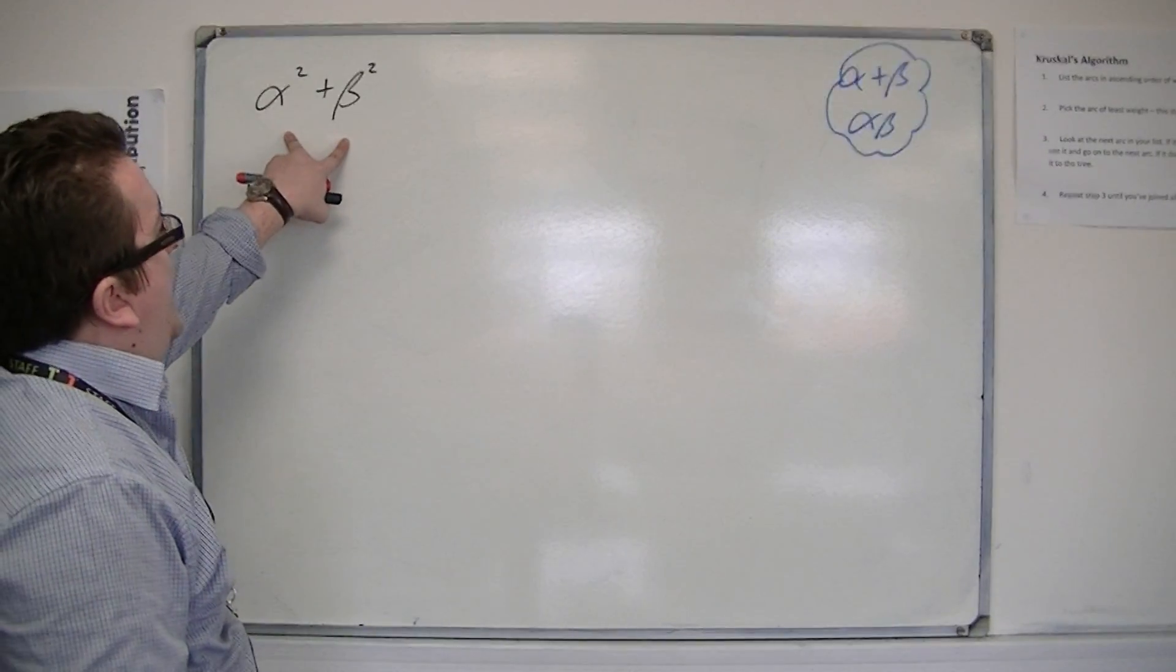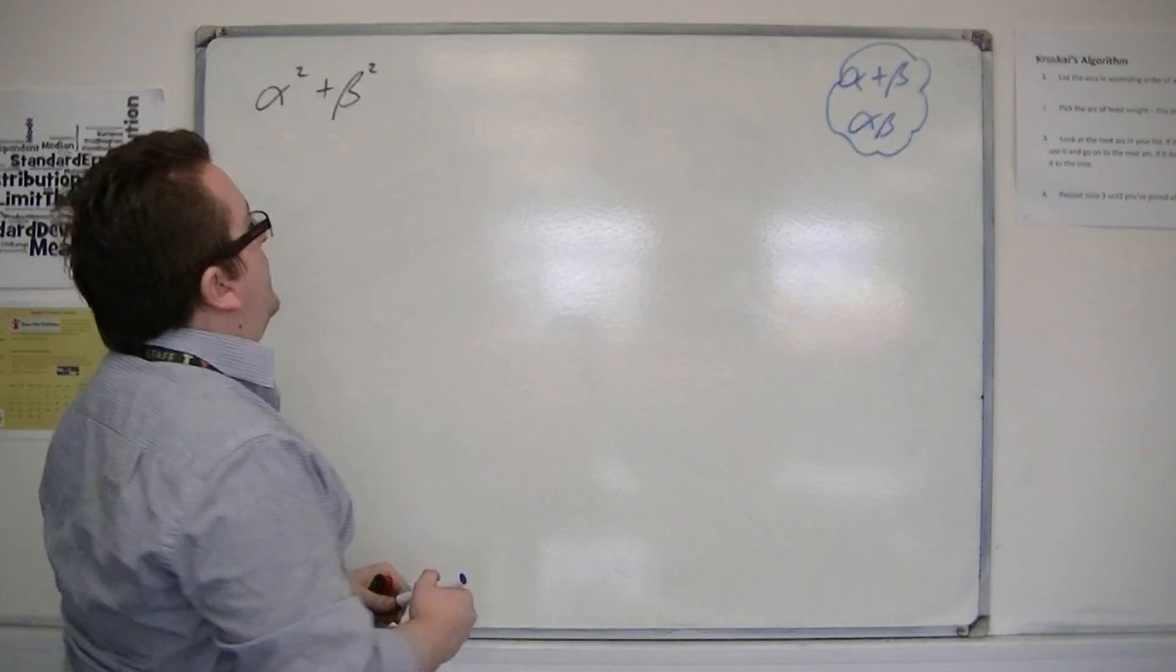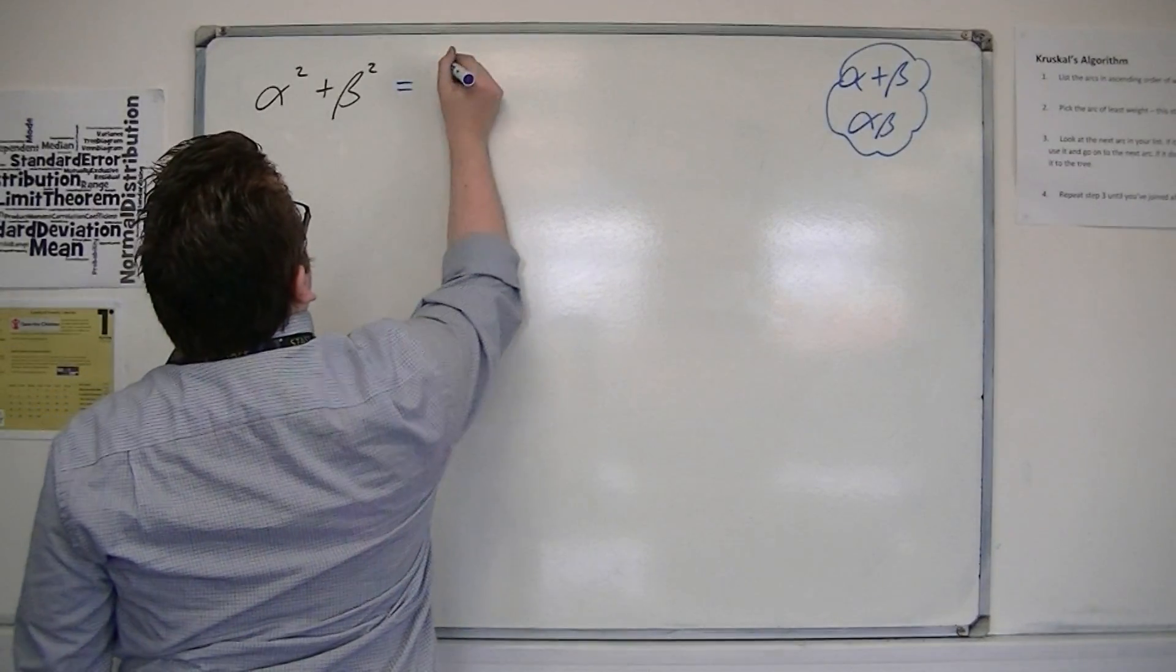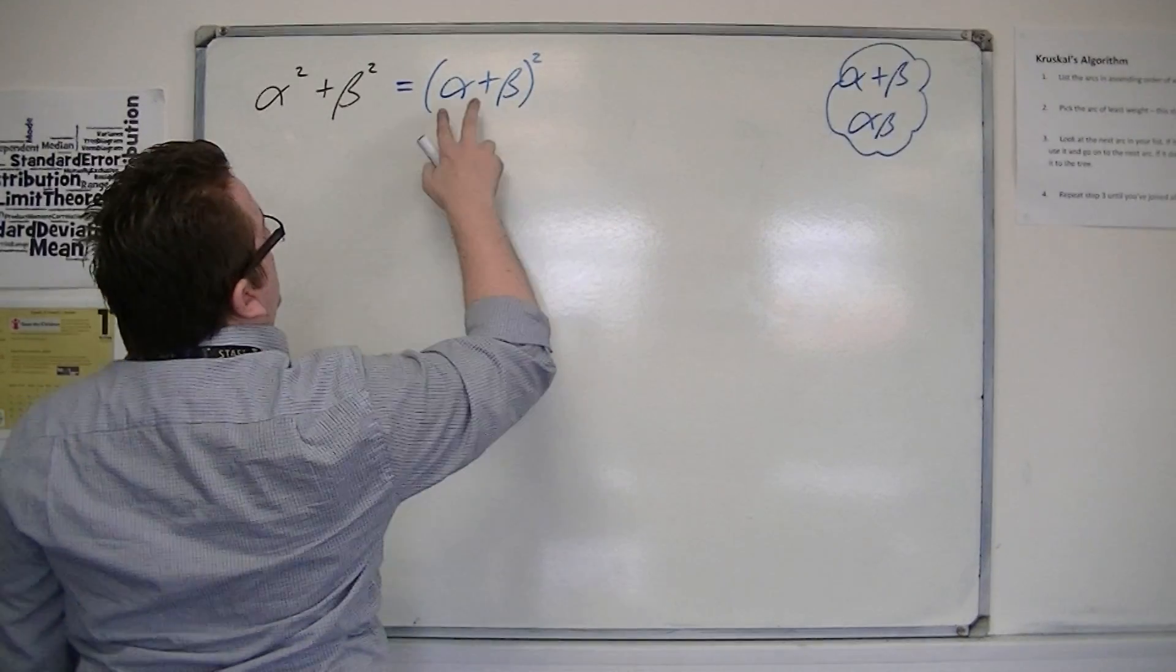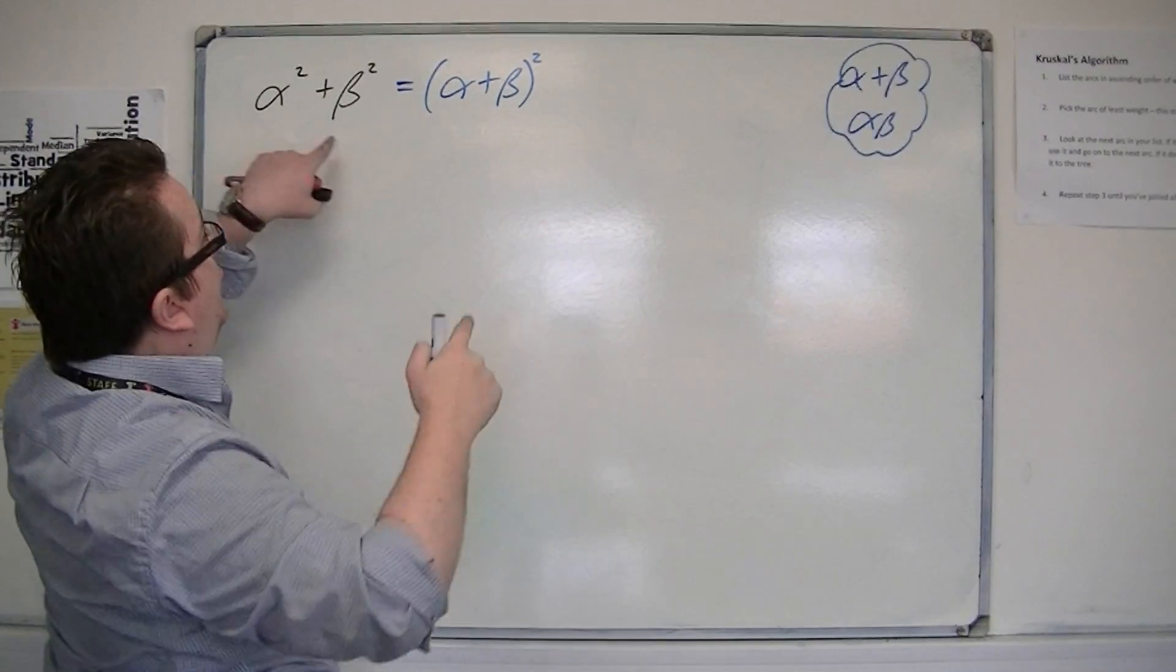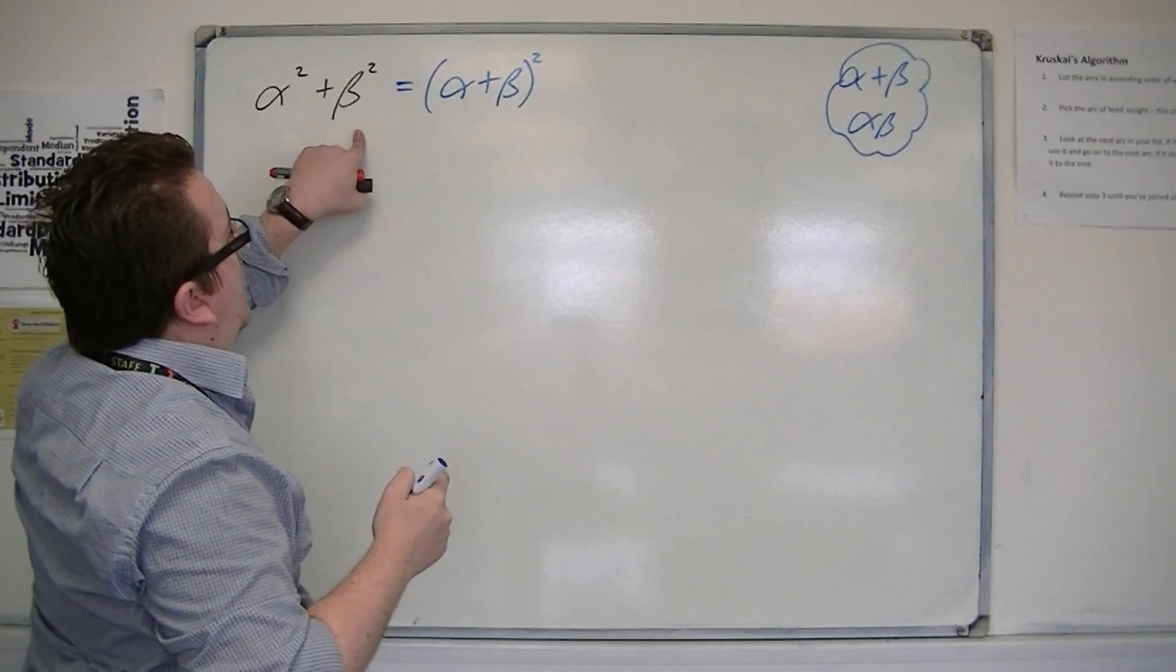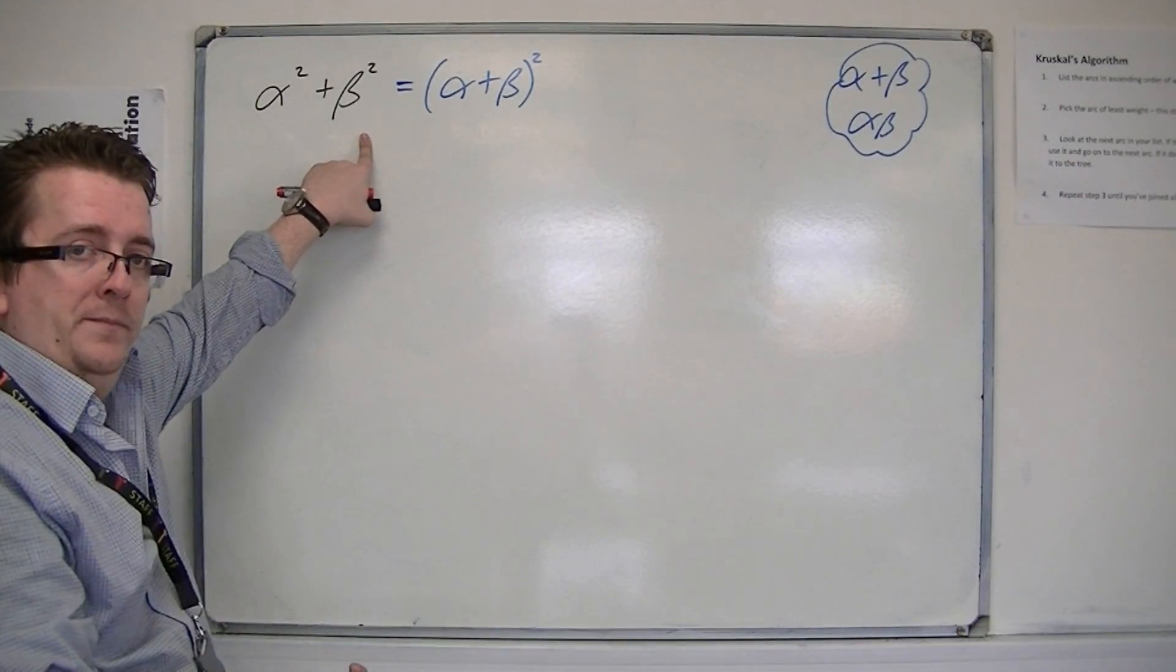So, how can I get an alpha squared plus beta squared? Well, I know I can get an alpha squared plus beta squared by squaring alpha plus beta. But when I square alpha plus beta, I get an alpha squared, I get beta squared, and I also get 2 alpha beta.